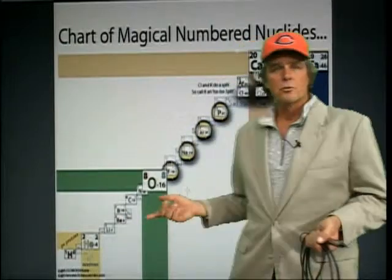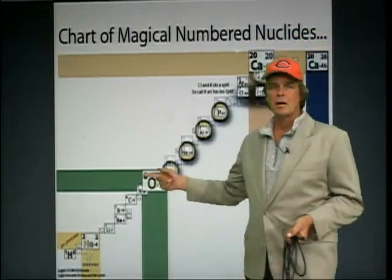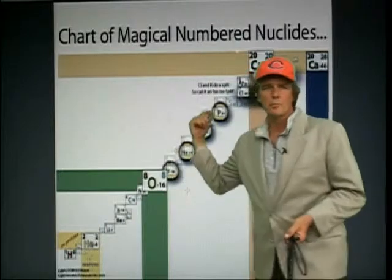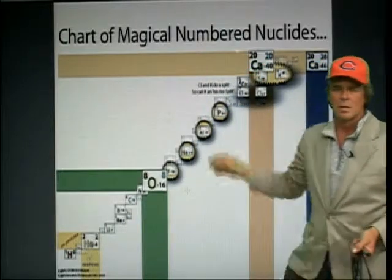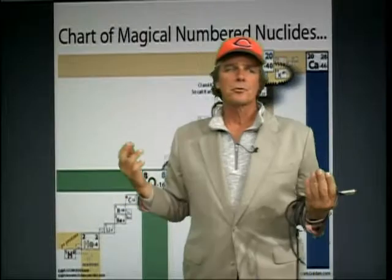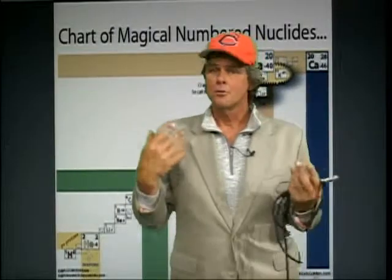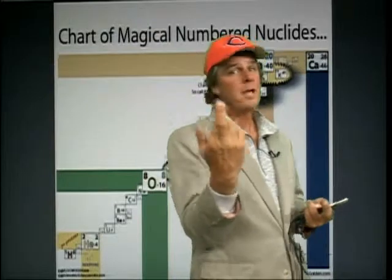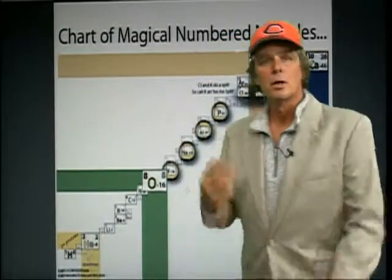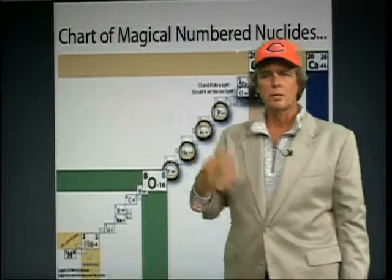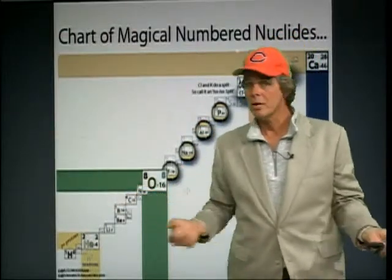For some reason, as we see with the magic numbers — 8 and 8 for oxygen, 2 and 2 for the alpha particle, 20 protons for calcium — there's just something called symmetry. There are pairs. Something about pairs: man and woman, up and down, true and false. Pairs seem to be what exists in the universe — matter, antimatter.